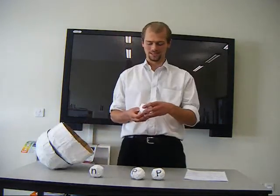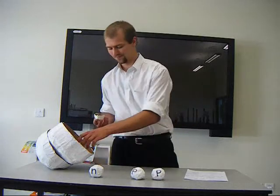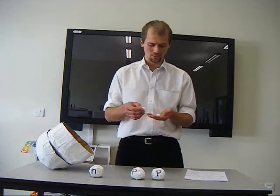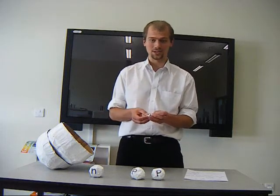If we open up one of the neutrons and look inside, then we find three quarks. We have an up quark and two down quarks.